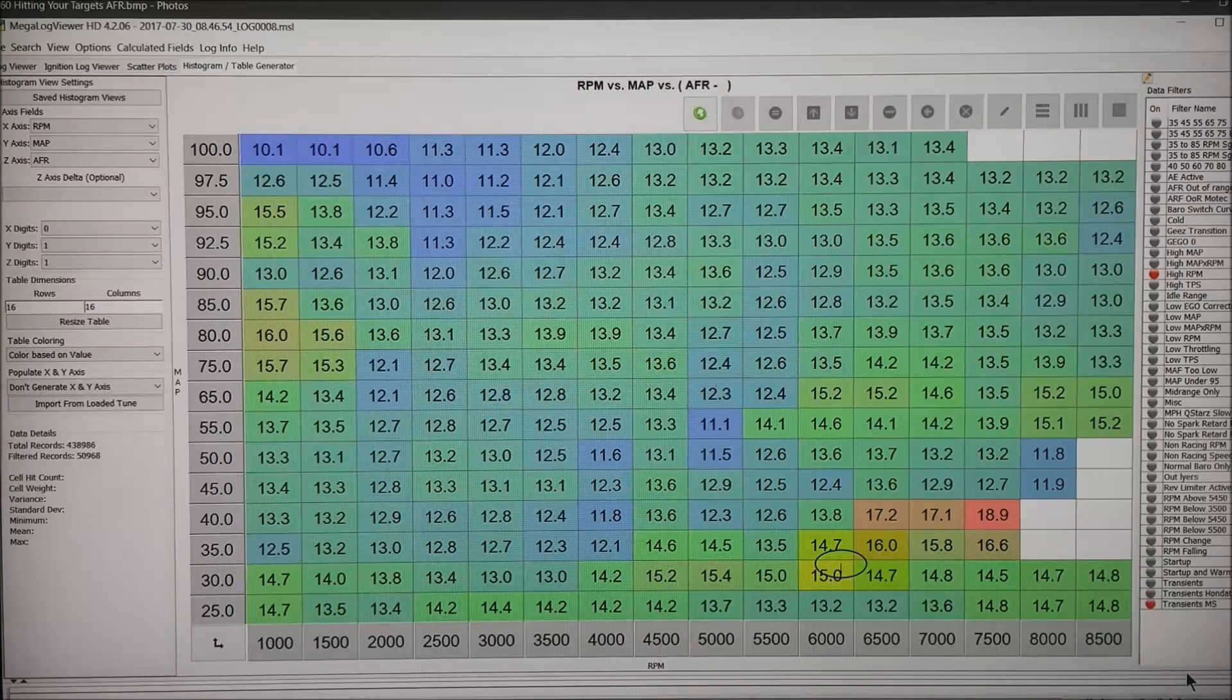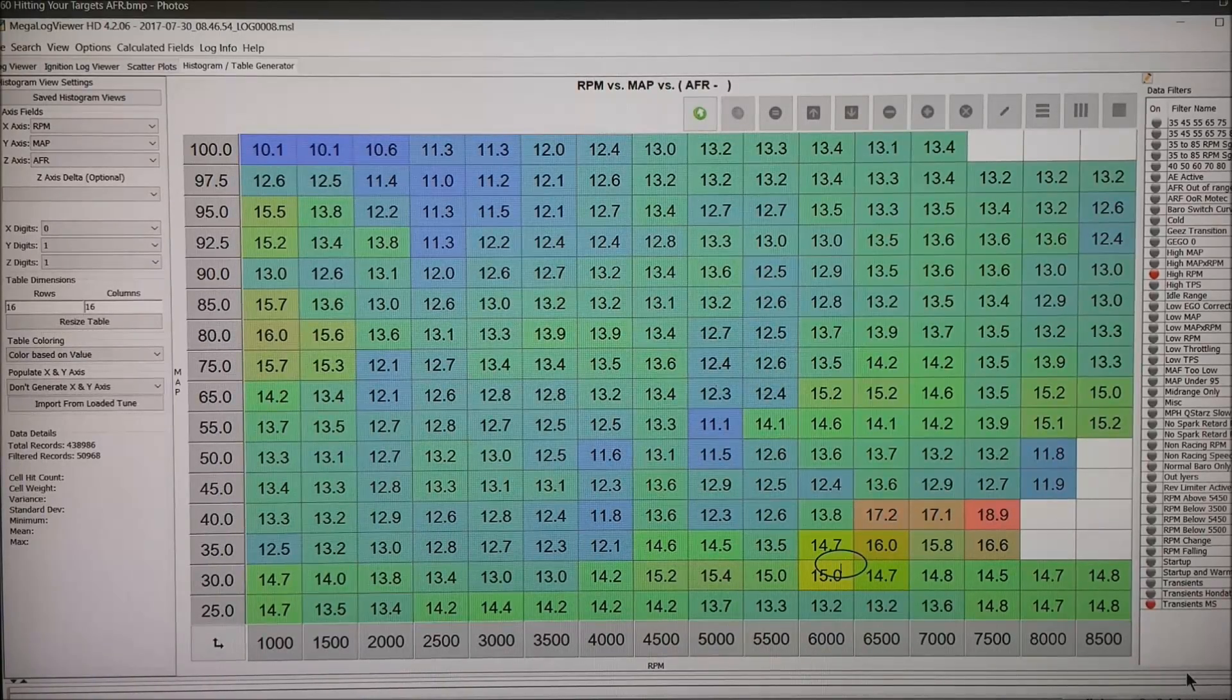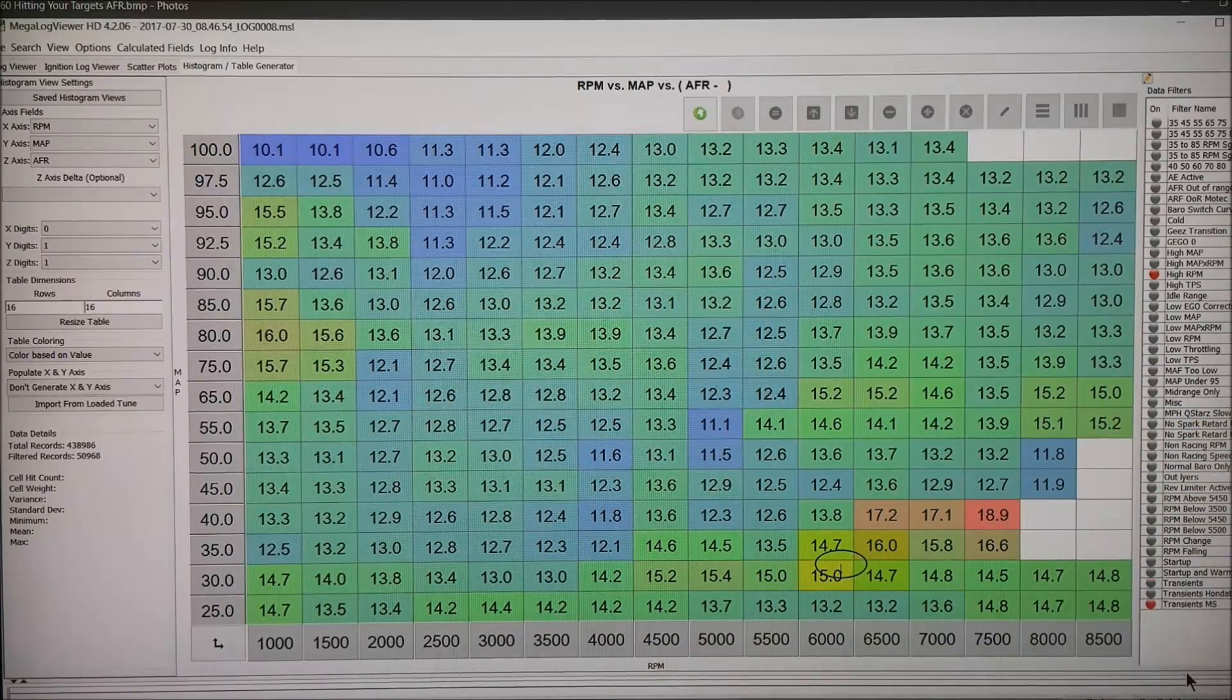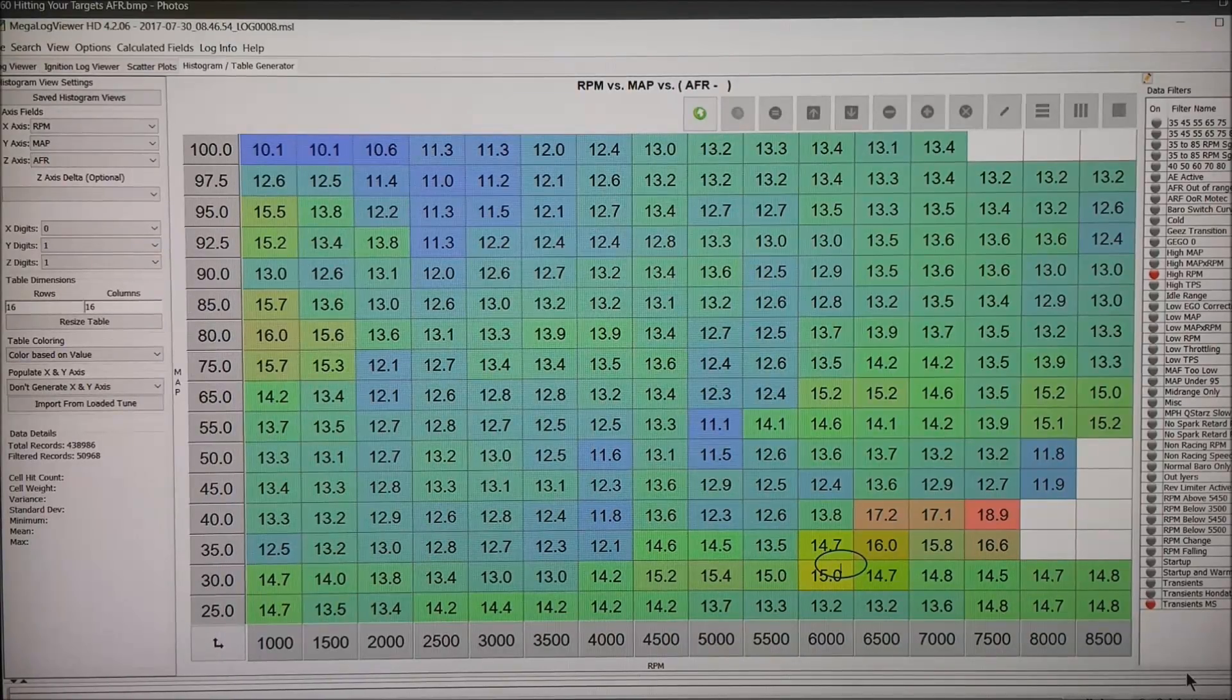And here is the same view in RPM vs Map. And that happens to be exactly the same data. It is interesting how little lean spots show up in speed density that weren't so obvious in AlphaEd.